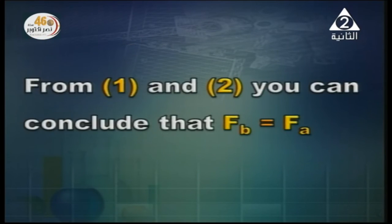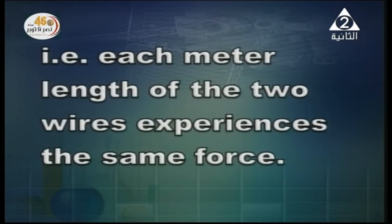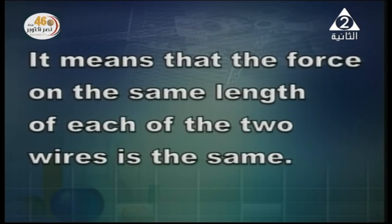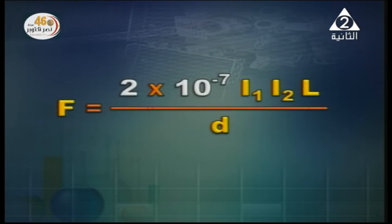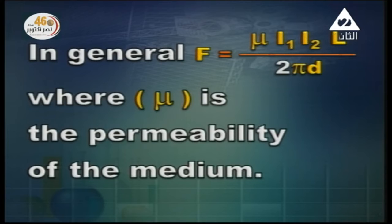From equations one and two, we can conclude that F_B equals F_A — the force produced by wire B equals the force produced by wire A. Each meter length of the two wires experiences the same force. It is calculated from the expression 2 × 10⁻⁷ × I1 × I2 × L / D, when the medium between the two wires is air. In general, F = μ I1 I2 L / 2πD, where mu is the permeability of the medium.